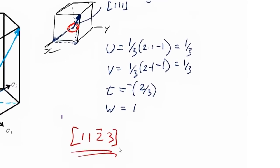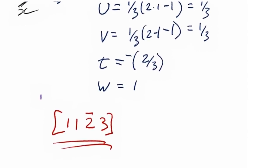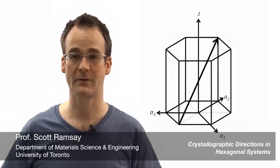So our enclosure then in square brackets is going to be one, one, two bar, three. All right, fantastic. Let's look at another vector now.